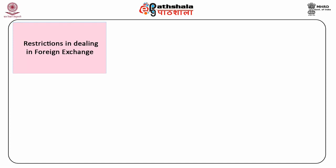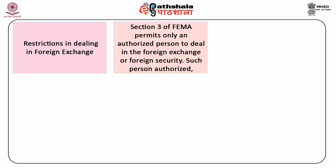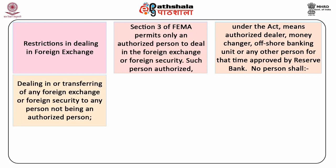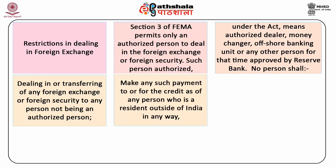Section 3 of FEMA permits only authorised persons to deal in foreign exchange or foreign securities. Such an authorised person under the Act means an authorised dealer, money changer, offshore banking unit or any other person for the time being authorised by the Reserve Bank. However, no person shall deal in or transfer any foreign exchange or foreign securities to any person not being an authorised person. No person shall make any payment to or for the credit of any person resident outside India in any manner.